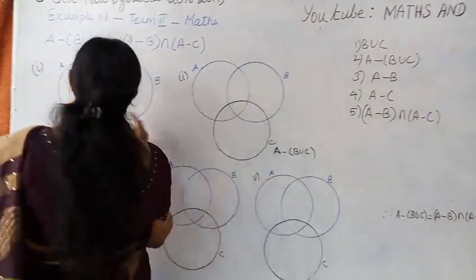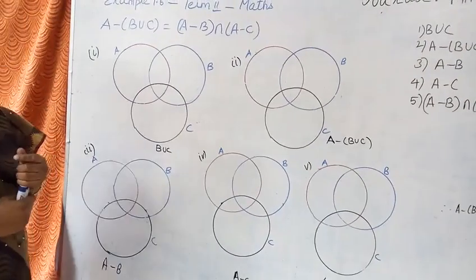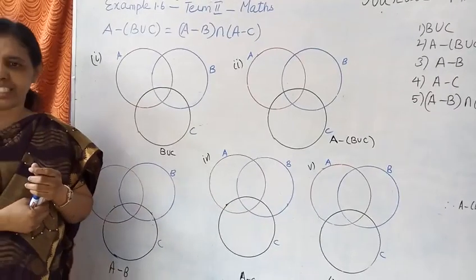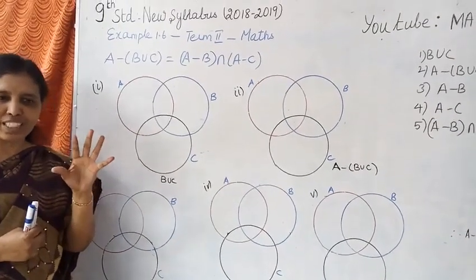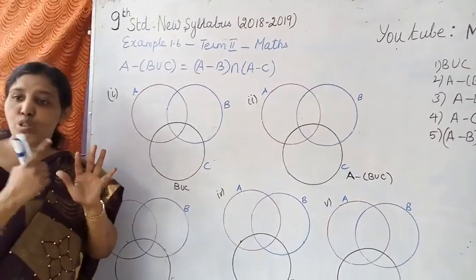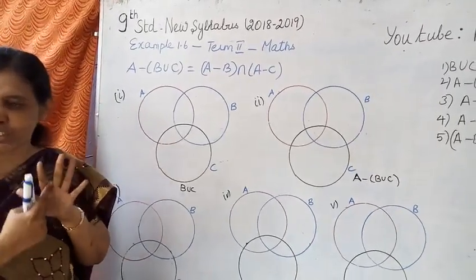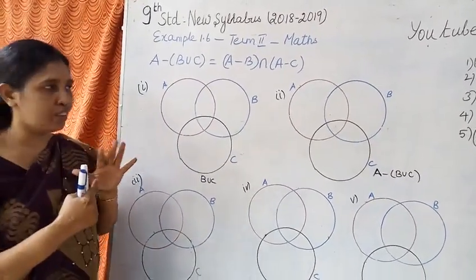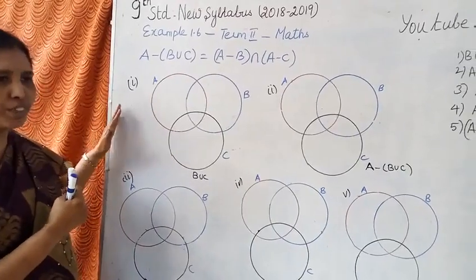Okay. Draw 3 circles. In De Morgan's law of complementation, I have taught you two full moons. In De Morgan's law of set difference, three full moons.